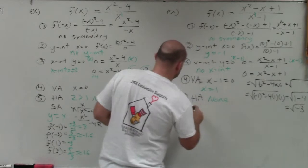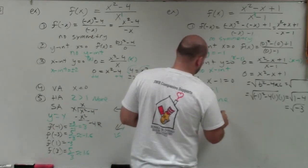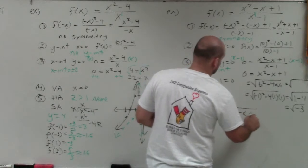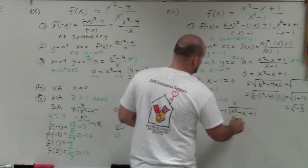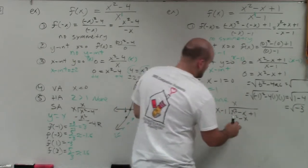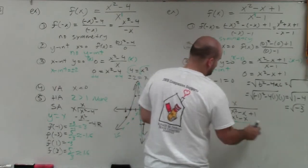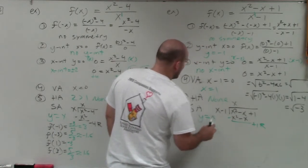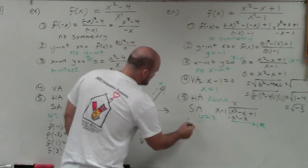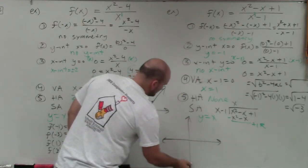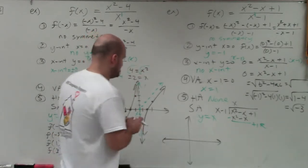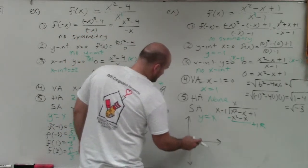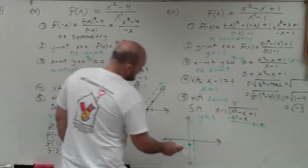Now let's check the slant asymptote using long division. x minus 1 divides into x squared minus x plus 1. x goes into x squared giving x; x times x is x squared, and x times negative 1 is negative x. Subtracting those rows, they divide out and I'm left with plus 1. x does not divide into plus 1, so that's the remainder. Therefore, y equals x is my slant asymptote.